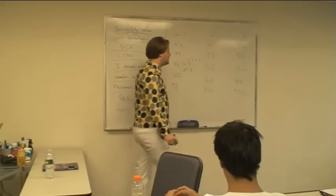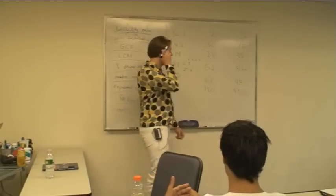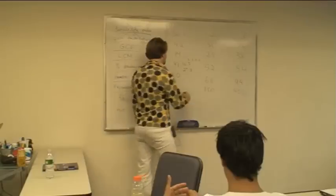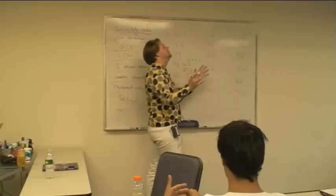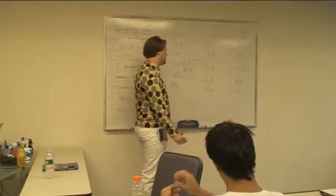52? 2 squared times 13. 54? 2 times 3 cubed. Yep. 2 times 3 cubed. 60? 2 times 3 times 5 times 3. Let's assemble our 2s together, right? Which is 2 squared times 3 times 5. Right. Good.